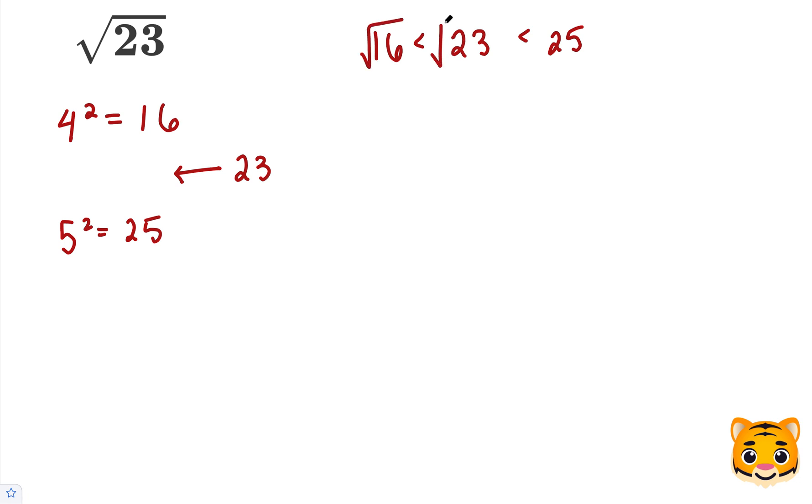Now we can take the square root of all these values in our inequality. The square root of 16 turns into 4, because 4 squared is equal to 16. The square root of 25 turns into 5, because 5 squared is 25.